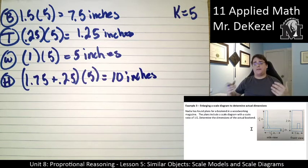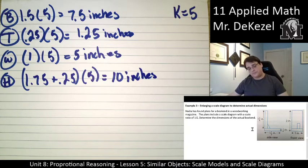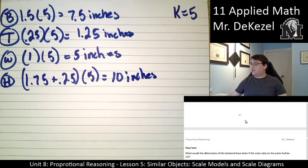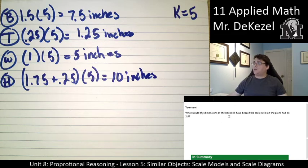You just take the values that they gave you, and because we're making it larger overall, we know that we need to multiply by the scale factor. Now there's the your turn. Essentially, what would the dimensions of the bookend have been if the scale ratio on the plans had been 2 to 9? So 2 to 9 instead of 1 to 5. So pause it here, give it a try, and come back.